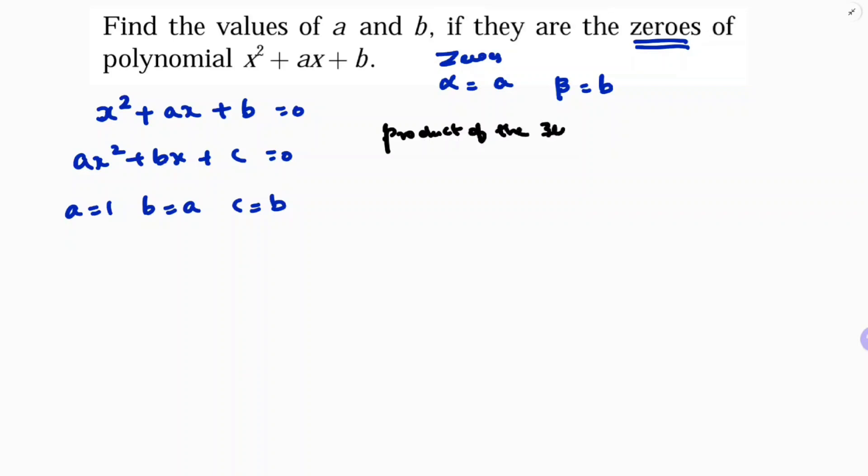If we solve product of the zeros, see alpha into beta equals c by a. First substitute alpha and beta values: alpha is a, beta is b. The values of c and a, so c is b, a is one. If we cancel here b and b, you'll get the value of a is one.